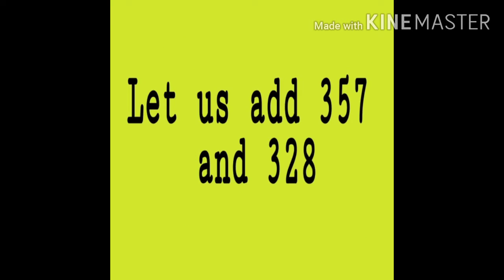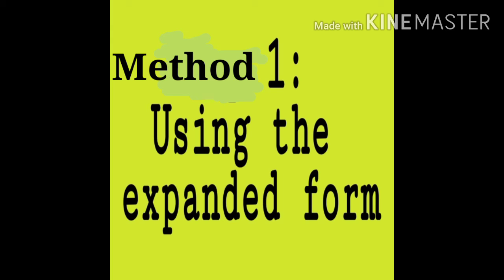Let us add 2 numbers: 357 and 328. We will learn adding these numbers with 2 methods. Let's discuss the first one.